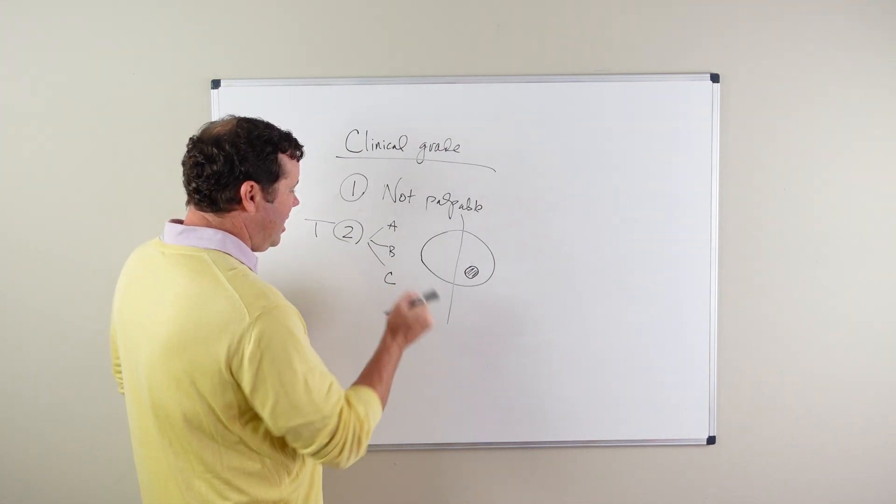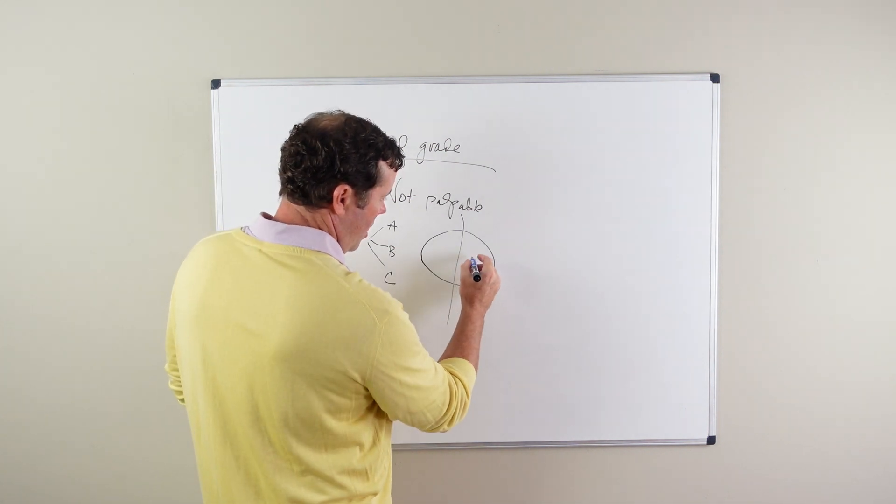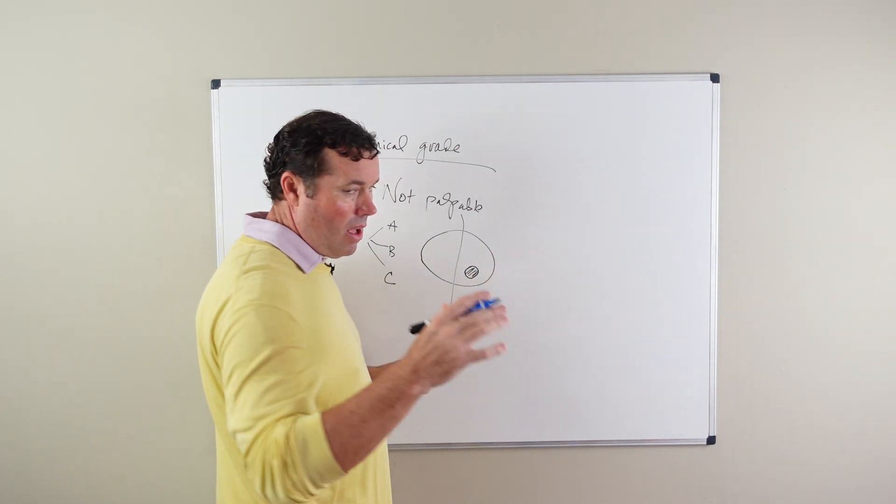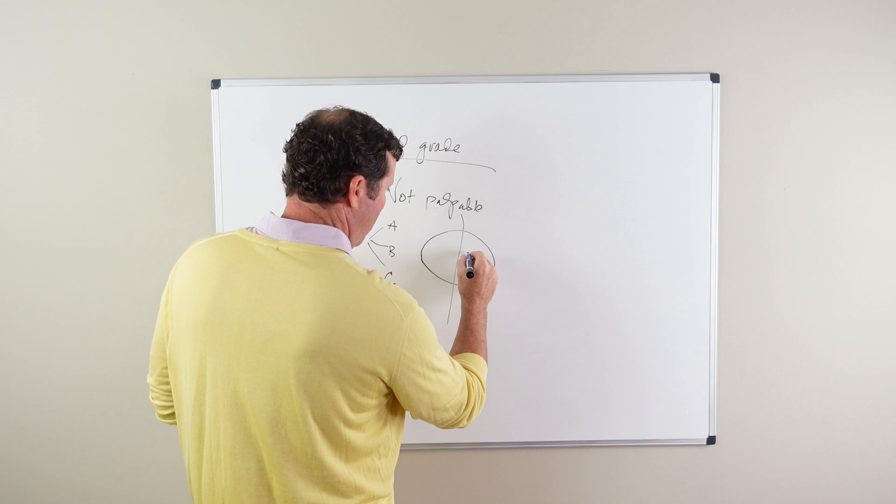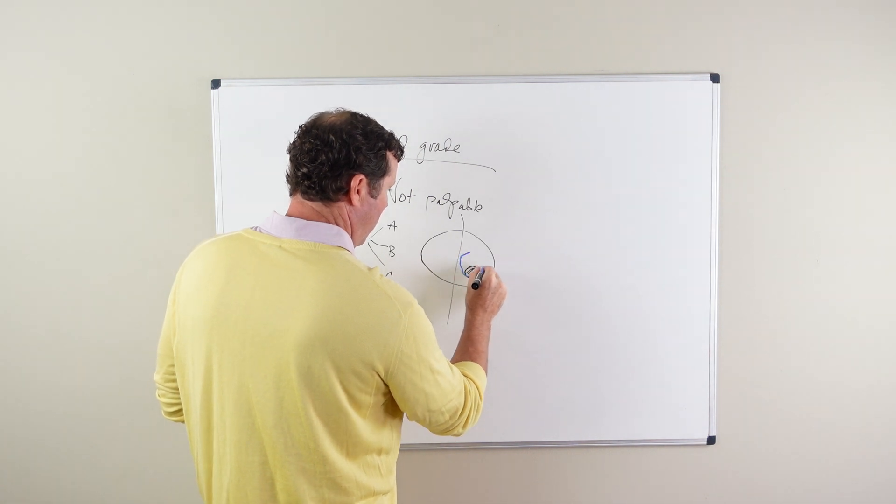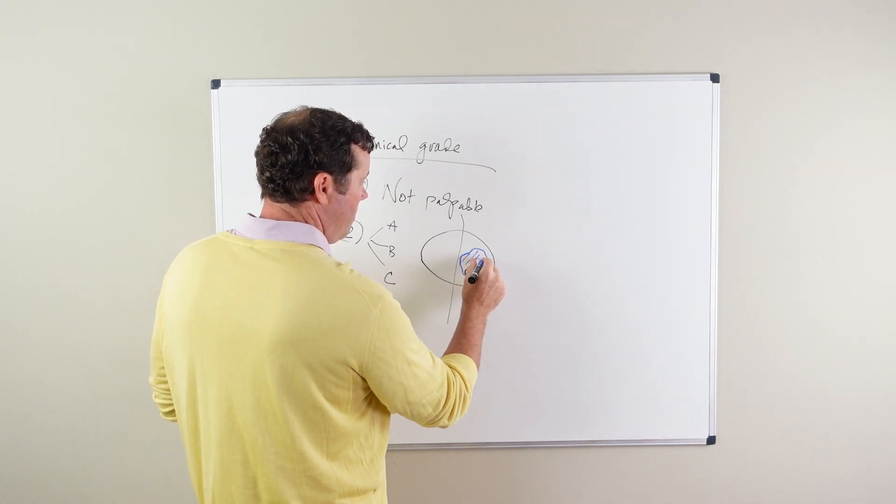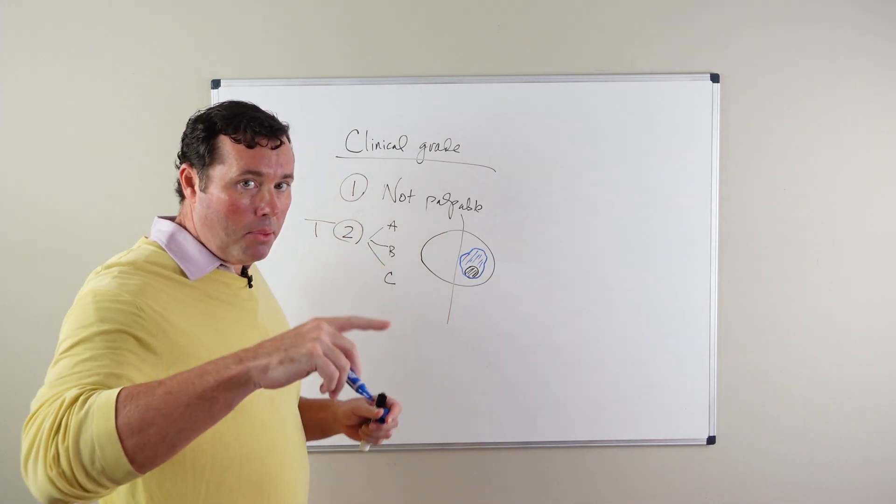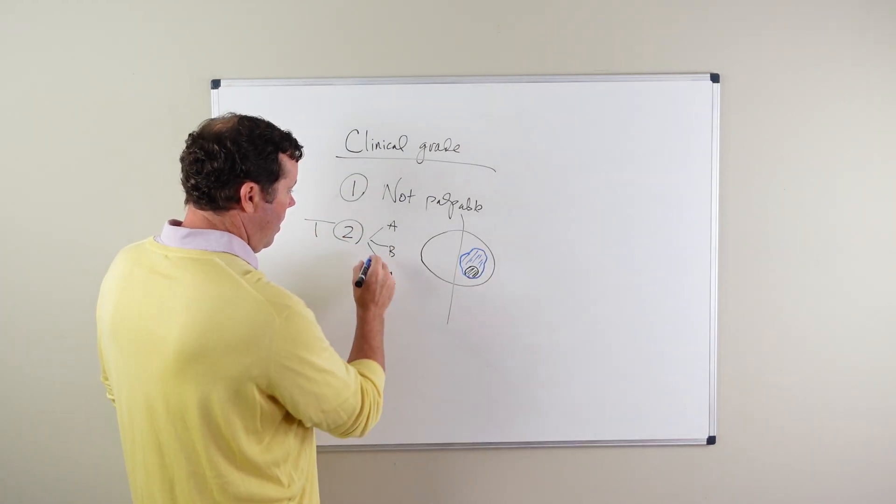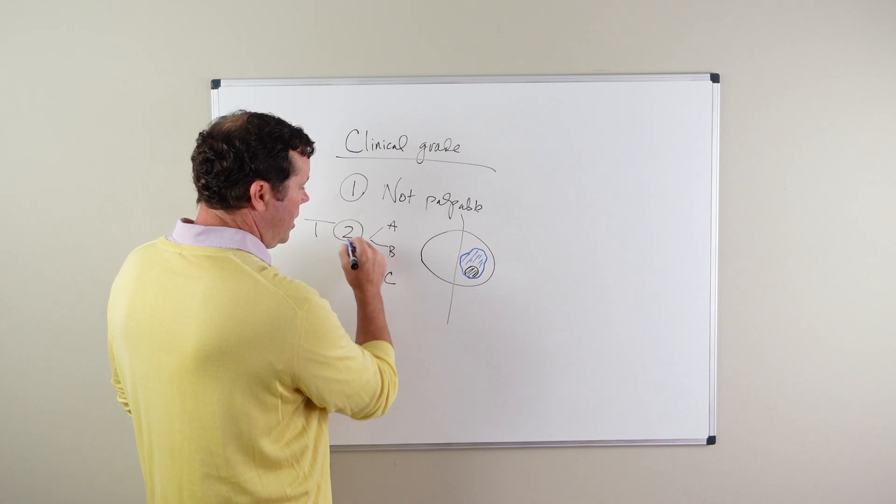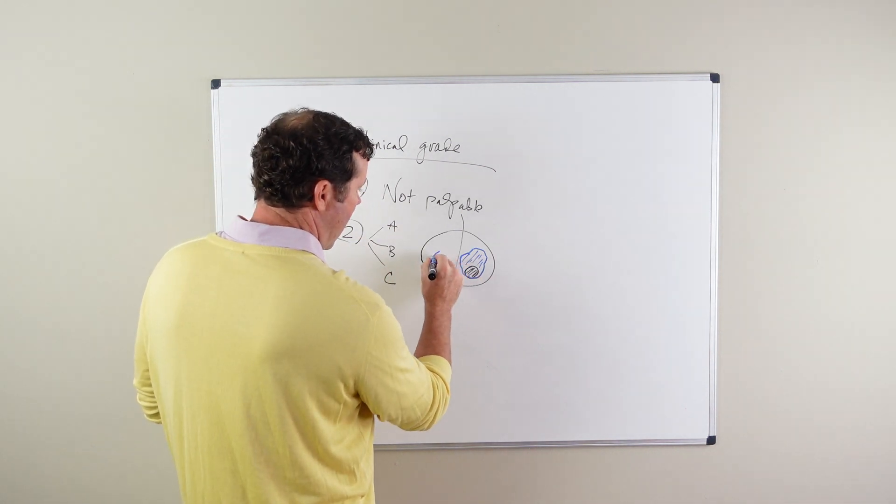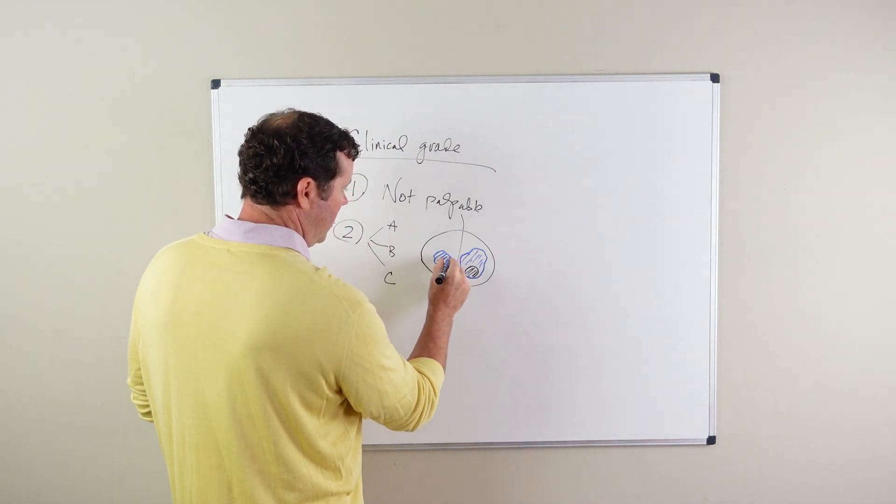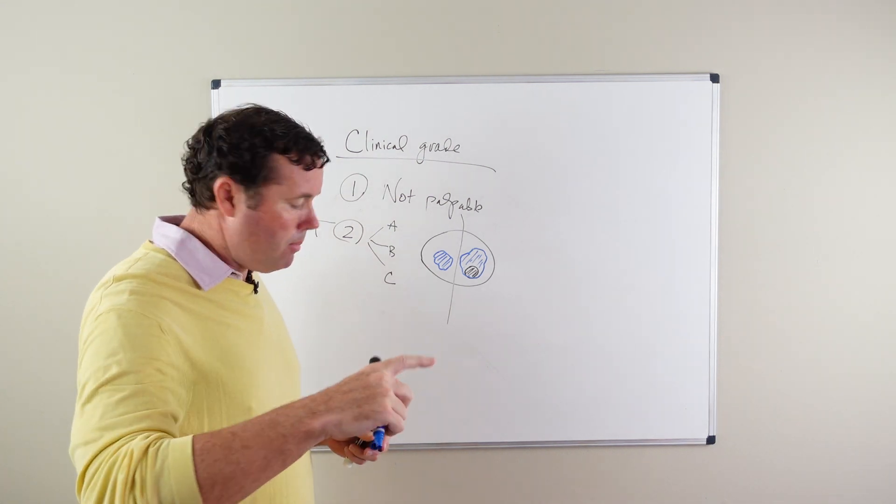Clinical grade T2B still involves one lobe of the prostate, but more than 50% of the lobe is palpable cancer with the finger. Clinical grade T2C is bilateral, or both sides of the prostate have palpable cancer.